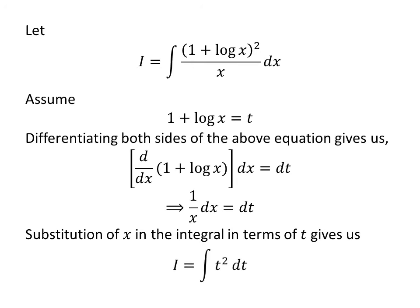In the integral i, let us substitute 1 plus natural log of x by our assumed value t and 1 upon x times differential of x by differential of t. So we get i is equal to the integral of the square of t with respect to t.